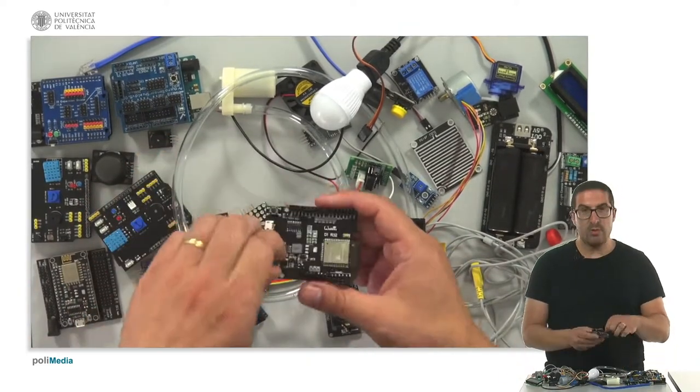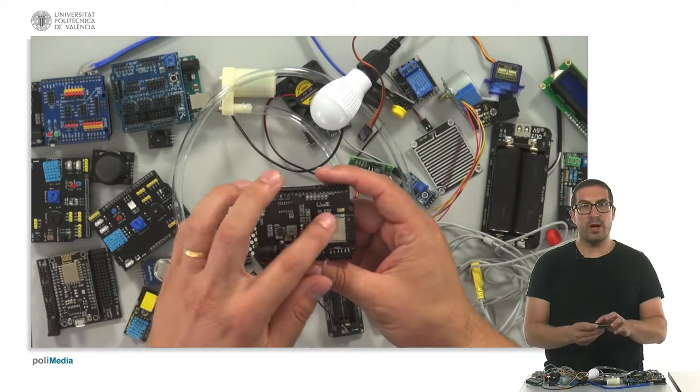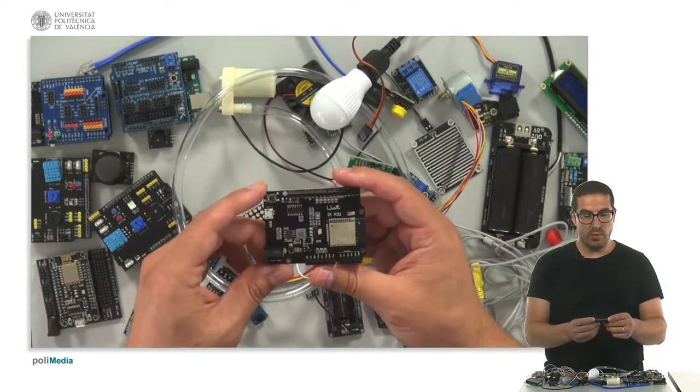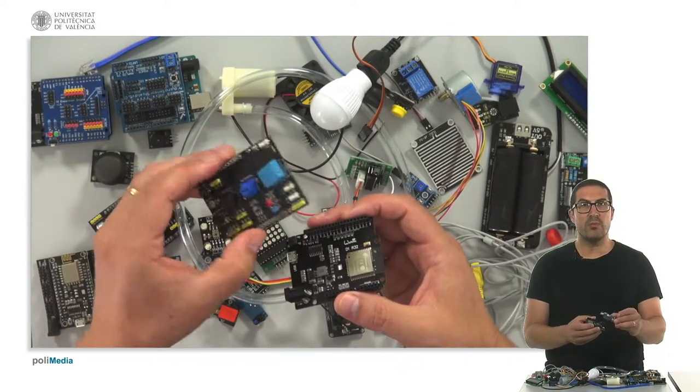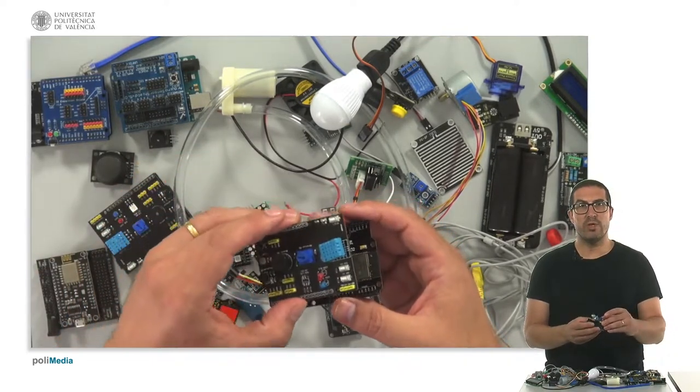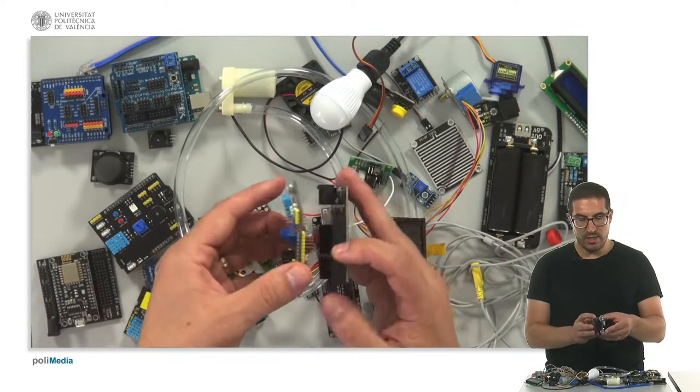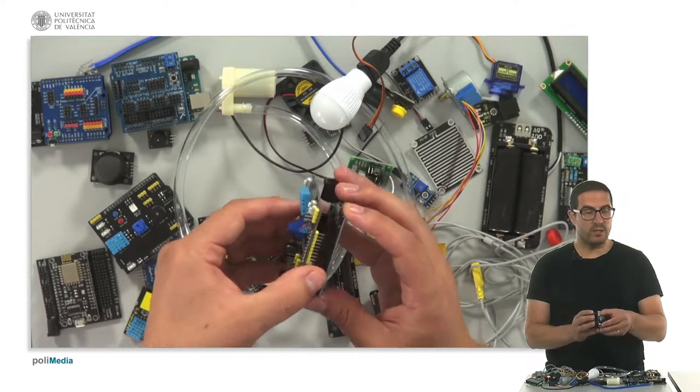So let's start with the board Wemos D1 R32. This is the board that we will use for all our exercises and this board works together with the multi-sensor shield that will be used also in our exercises and they can be connected together like that.